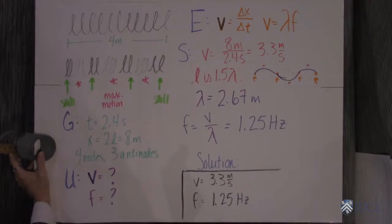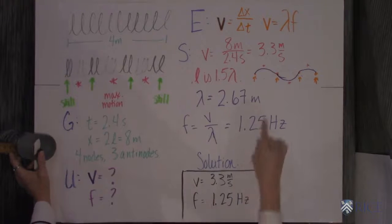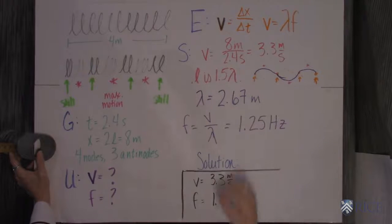You also have to know what the wavelength is. The problem gives you that you have four nodes and three antinodes. It helps me if I draw a transverse wave. You represent it in a graph form. That way you can see exactly how many wavelengths are in four nodes and three antinodes.